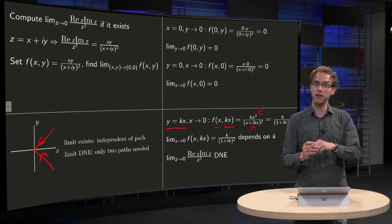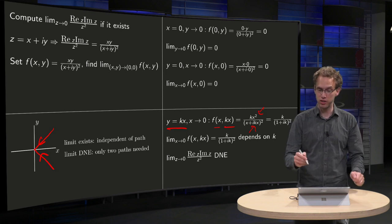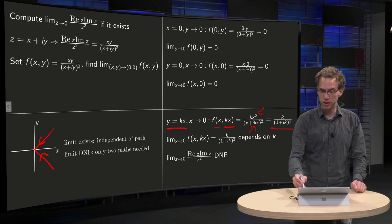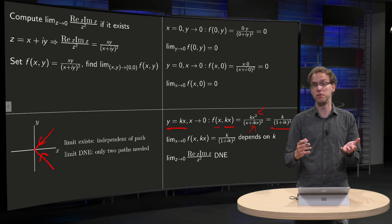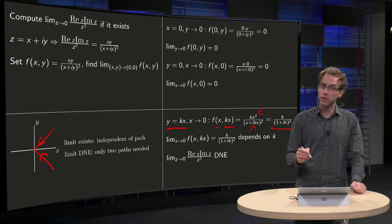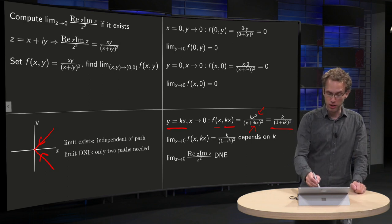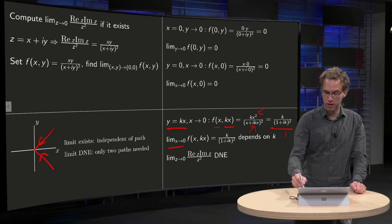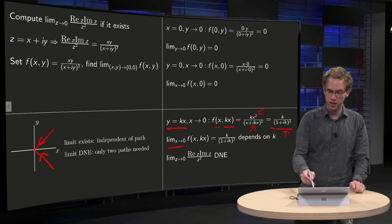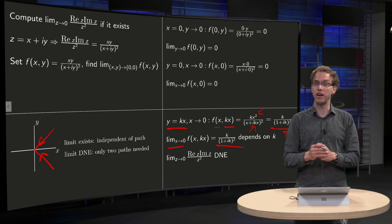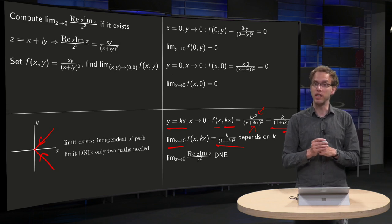And then you can see, you can take out the x squared, so the x's cancel out, so your expression happens to be in this case independent of x. Well ok, then taking the limit x to 0 of this expression, nothing happens of course because there is no x in this expression, so our limit equals k divided by 1 plus i times k squared.